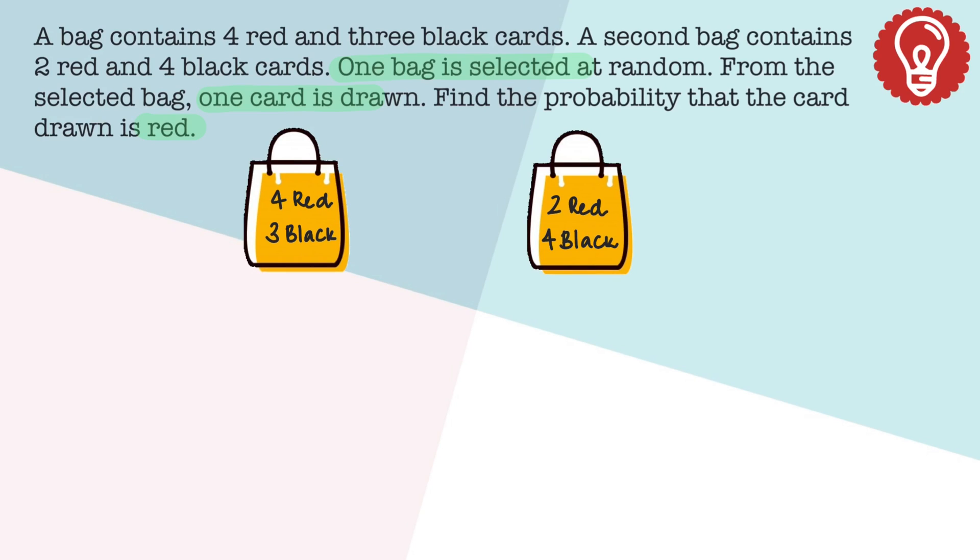There are two bags and the probability of selecting the first one is 1 by 2, and in the first one, we need to select a red card. So there are seven cards altogether and there are four red cards. Or the probability of selecting the second bag is 1 by 2, and in this bag we have six cards, and red cards are 2 in number.